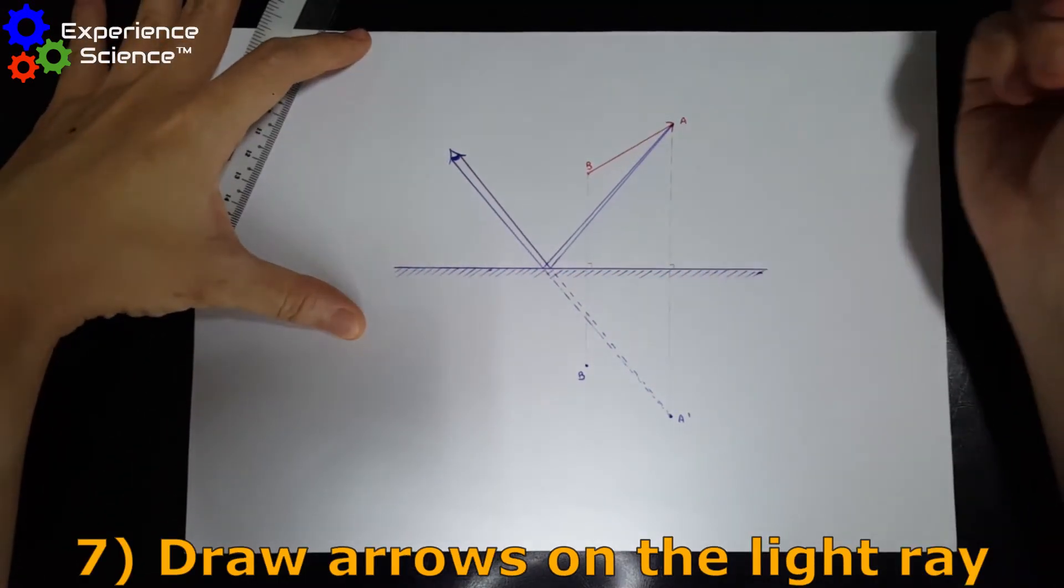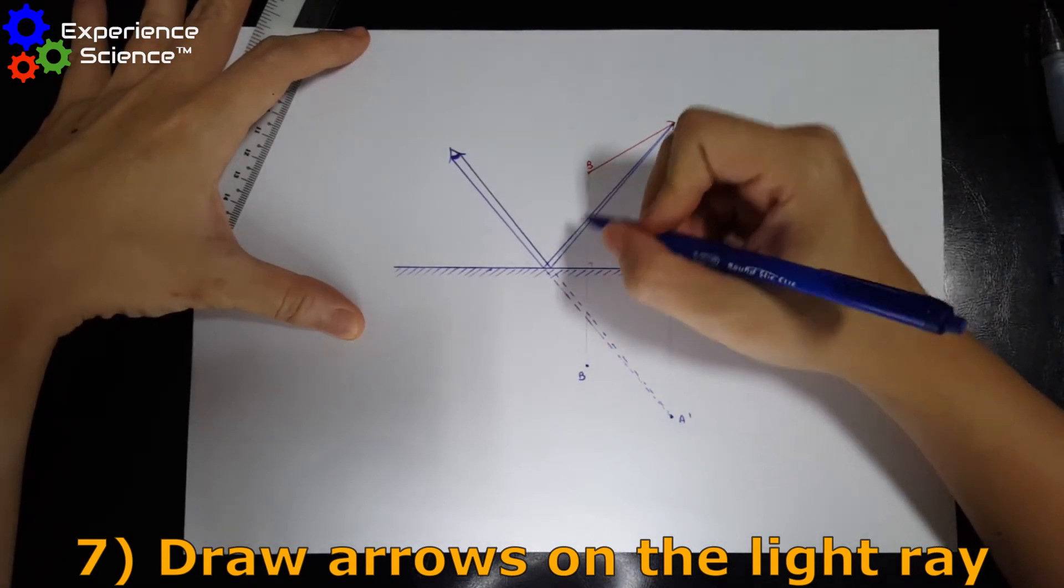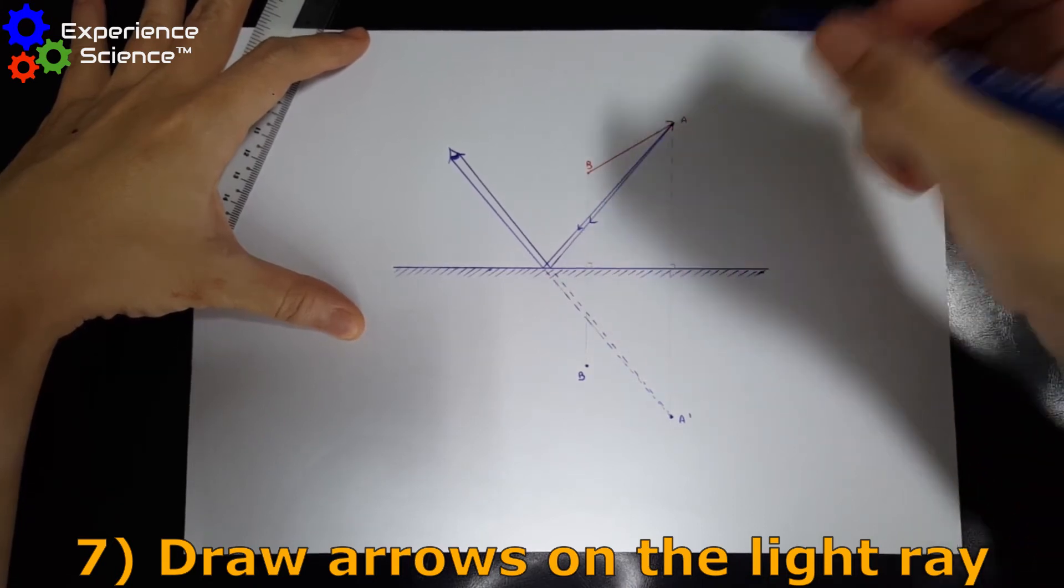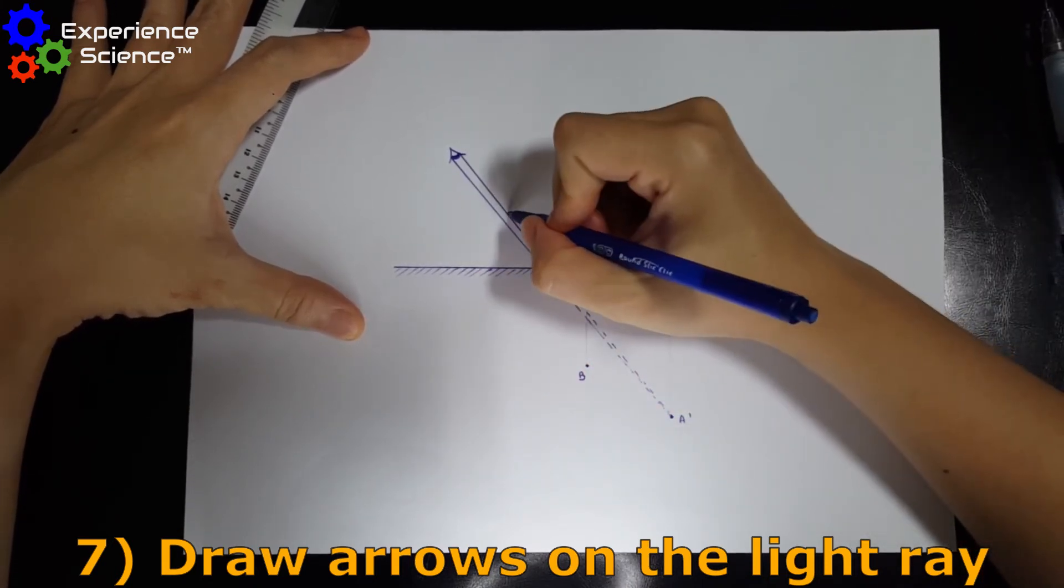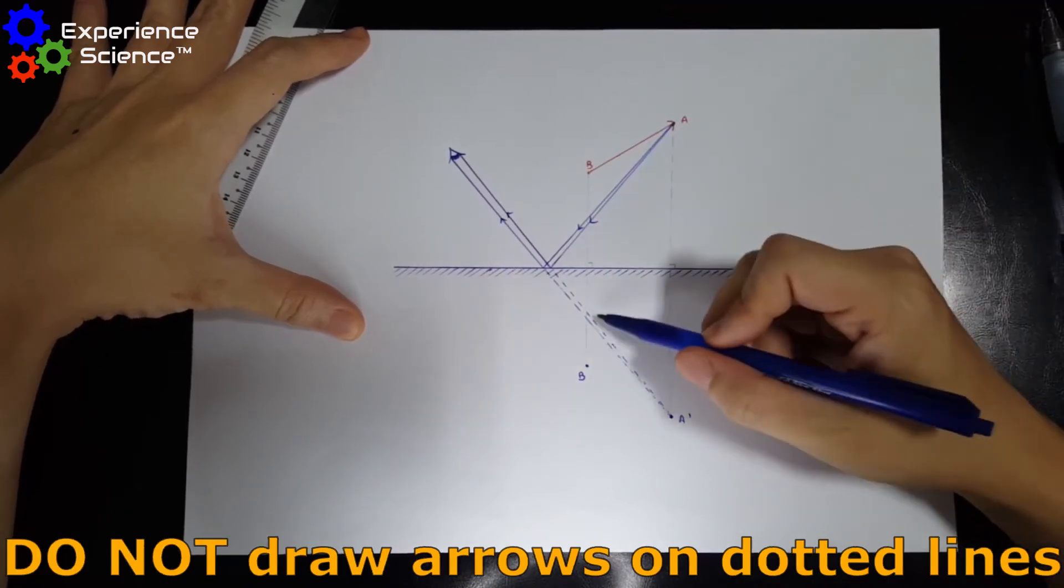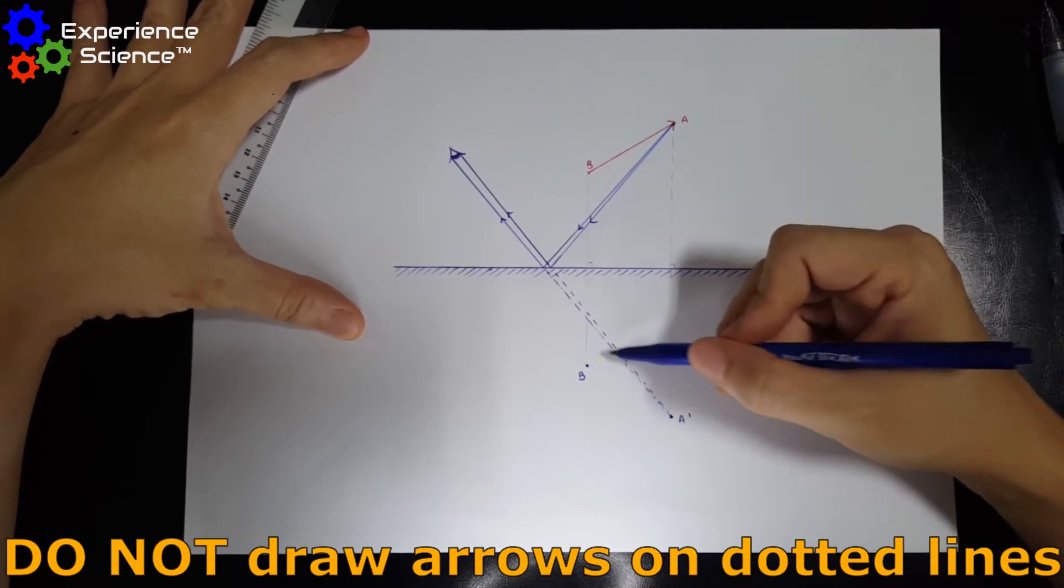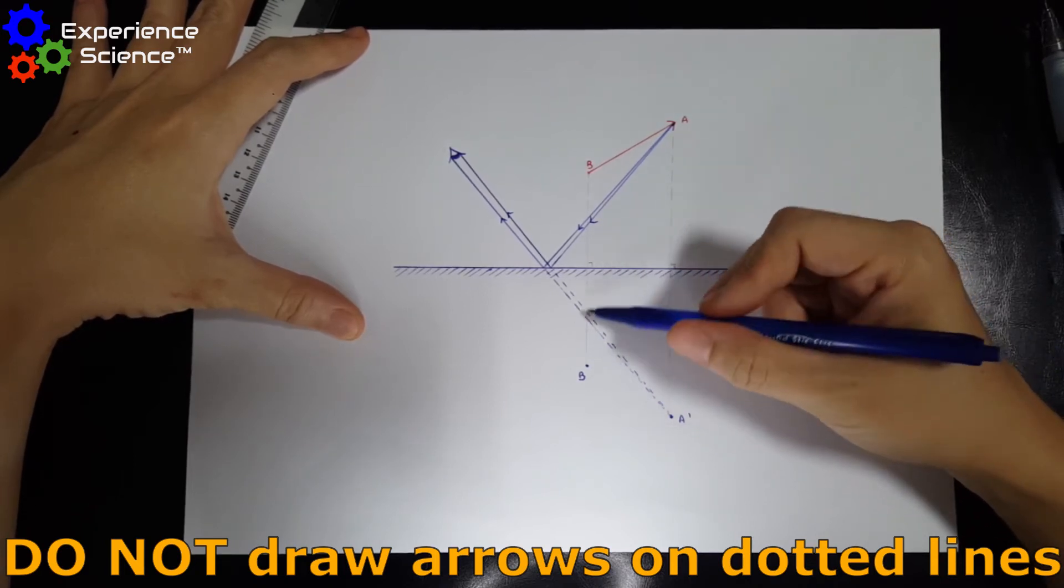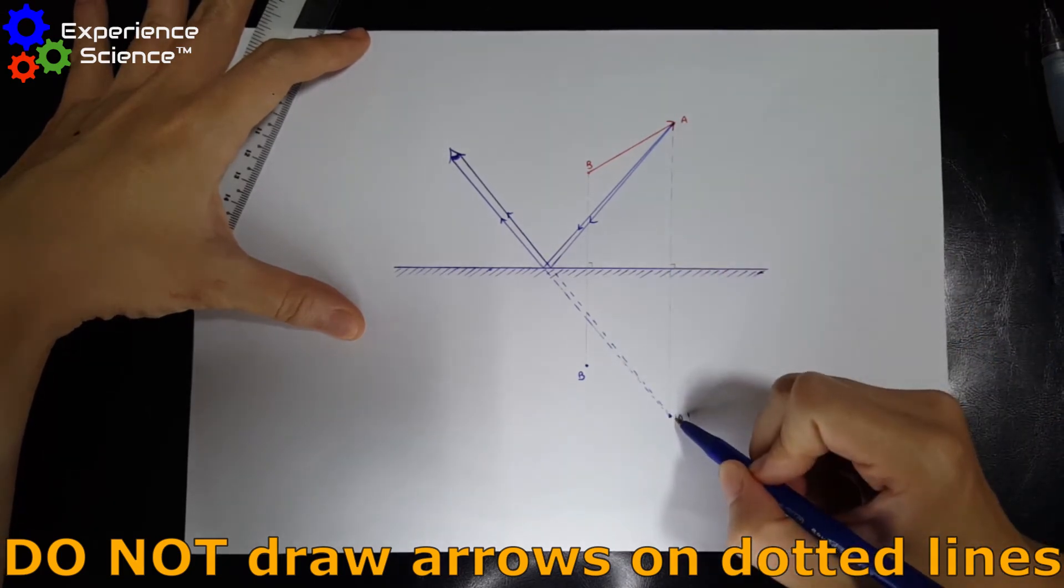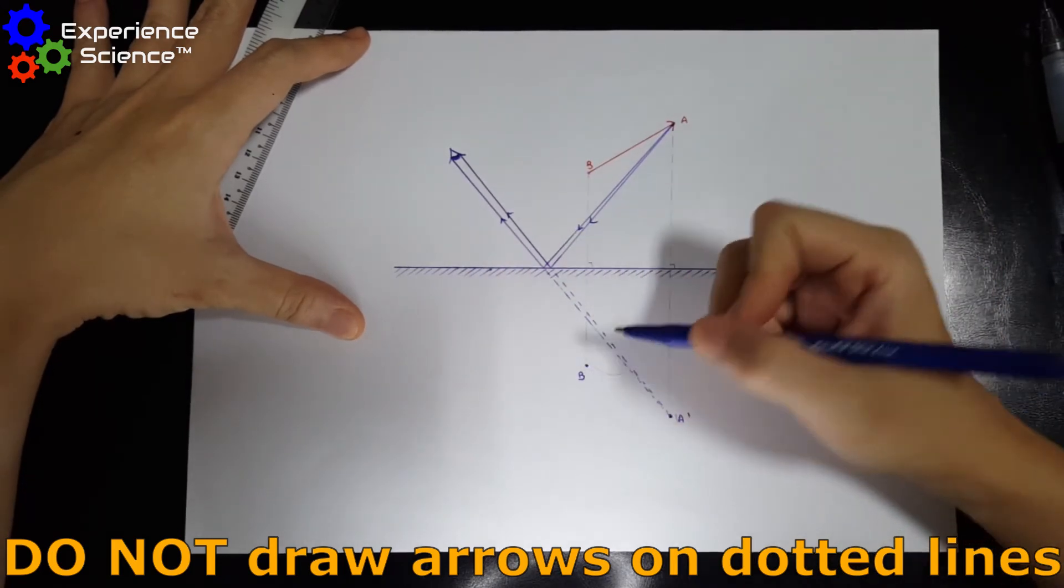The final step is to draw the light rays. Since light travels from A to the mirror, we will draw the arrows this way. And then from the mirror to the eyes, we're going to draw the arrow this way. Do take note that you should not draw any arrows on this dotted line because this is a virtual image. And so light does not actually shine from the image to the eyes.